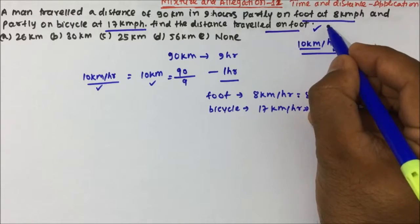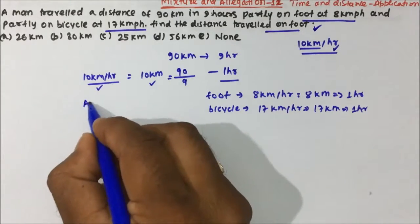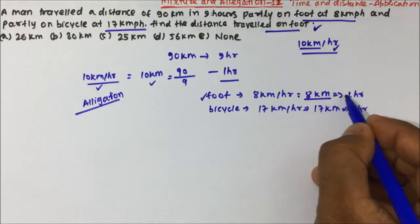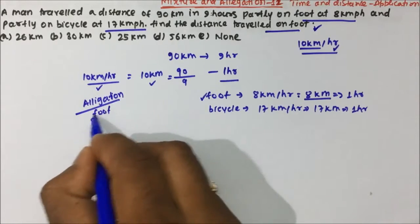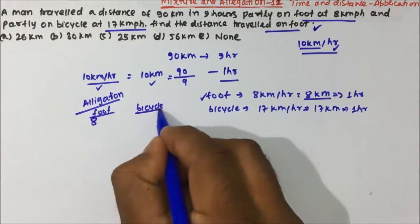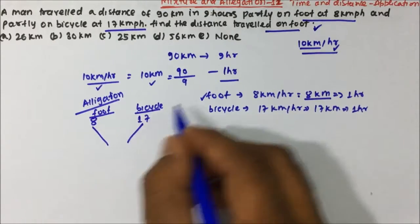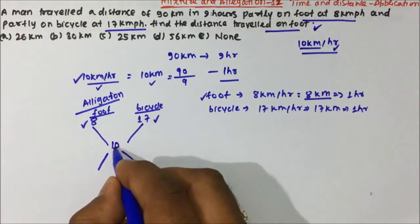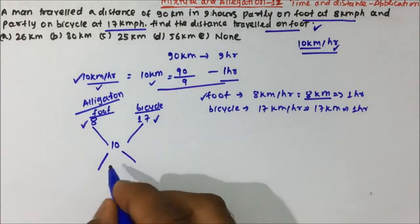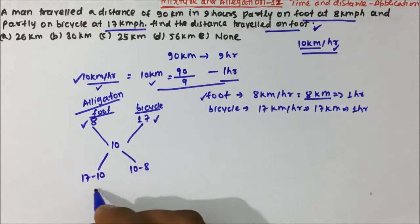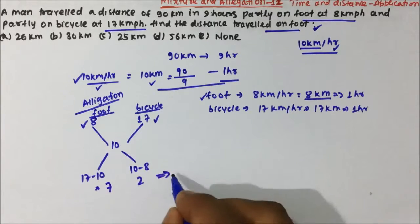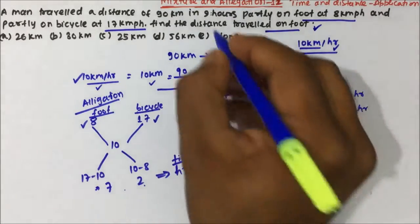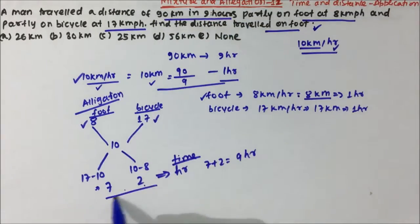If you solve this by the Time and Distance method it will be quite lengthy, but using the Allegation rule it is very easy. On foot the person travels 8 kilometers in one hour, on bicycle it is 17 kilometers, and the average distance covered per hour is 10 kilometers. Subtracting: 17 minus 10 equals 7, and 10 minus 8 equals 2. The ratio is 7:2, and 7 plus 2 equals 9 hours — matching the total travel time.